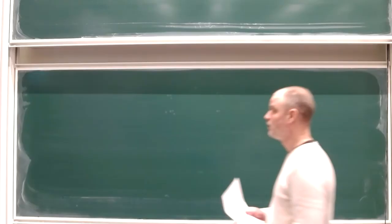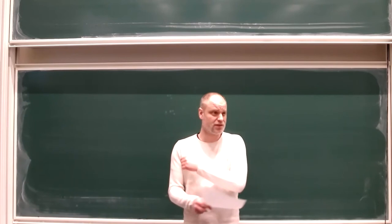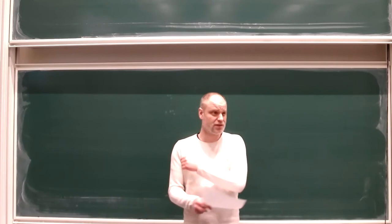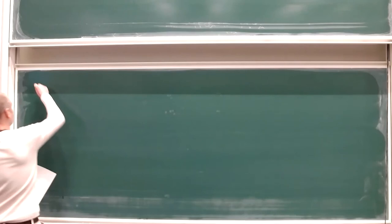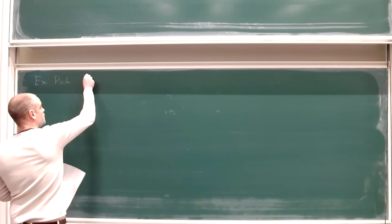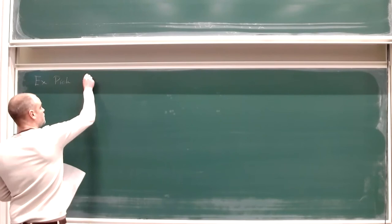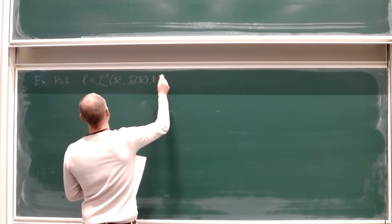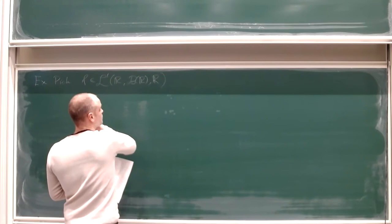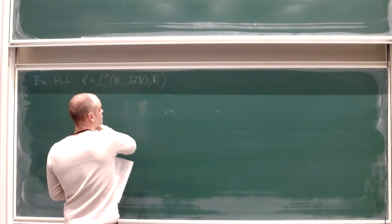What else can we do with the Monotone Convergence Theorem? We can finally introduce a multitude of measures on the real line. So far we've only been dealing with the Lebesgue measure. The MCT allows us to introduce new measures as follows.